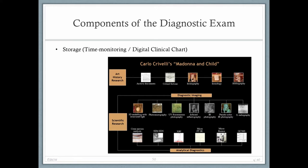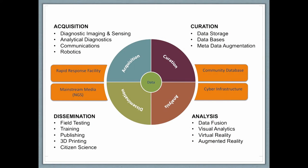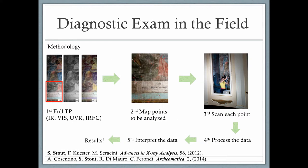In order for time monitoring to occur and see if there are any material or visual changes, we need a place to store the data — that's the digital clinical chart, where the data can live until the next checkup. This feeds into a feedback loop involving data acquisition, curation, analysis, and dissemination. Here's a comprehensive view of the diagnostic exam in the field: collection of technical photography, planning and mapping of XRF points, scanning each point, processing the data, interpreting the data, and arriving at the results.